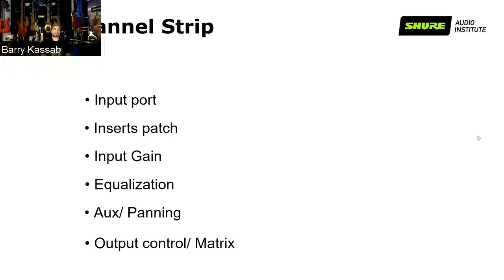After the gain structure, we go into equalization. As mentioned last week, the sound you're capturing is not always perfect — the room isn't perfect, the instrument isn't perfect — so you need equalization. The equalization varies from mixer to mixer: it can be a basic bass, mid, and treble set of knobs, or it can be as advanced as a parametric equalizer in some mixers.